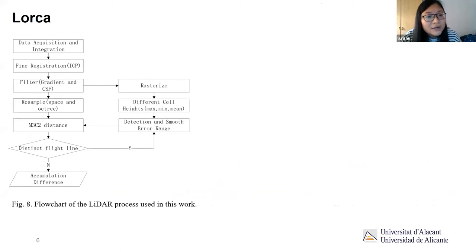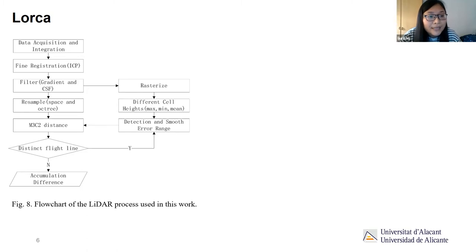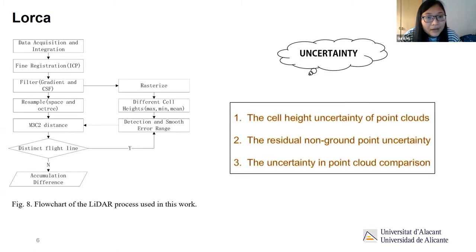This is our full workflow for LIDAR processing. First, we merge different LIDAR epochs and perform registration. Then we filter non-ground point clouds and sample the different point clouds. Here we found many flat lines, so we use different cell heights to remove them. Then we calculate the M3C2 distance to get the differences. During this process there are many uncertainties: the cell height uncertainty of point clouds, the residual non-ground point uncertainty, and uncertainty in point cloud co-registration, which all affect the results.